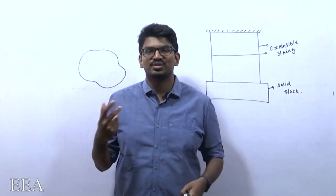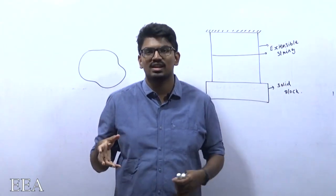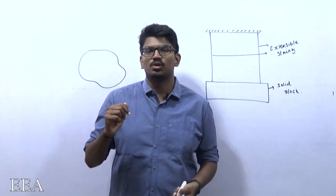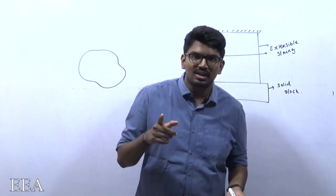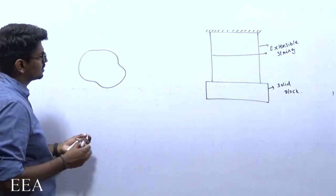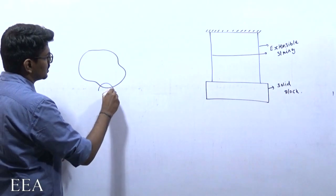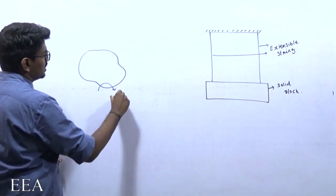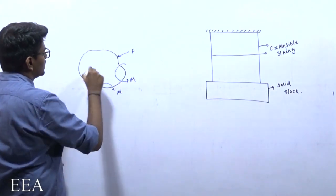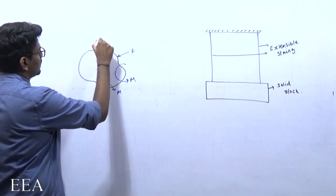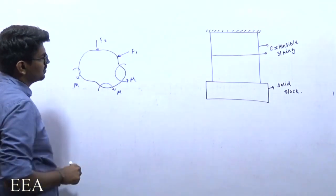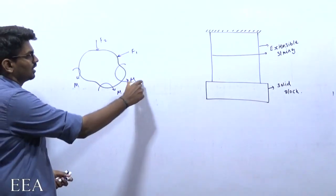Before classifying the types of mechanics, we need to understand what is meant by a rigid body and what is meant by a deformable body. We will start by defining what is meant by a rigid body. Consider a body which is subjected to different forces — forces F1, F2, and moments — a large number of forces applied to this body.